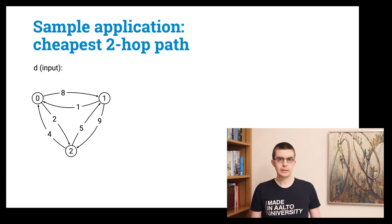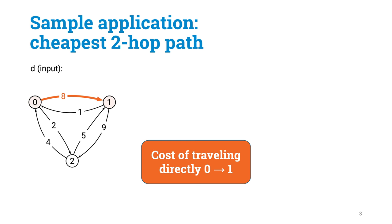Let us now introduce a simple computational problem that we are going to use as a running example throughout this course. In this problem we are given n points, here in this example n is 3, and we are given for each pair of points the cost of traveling from A to B.